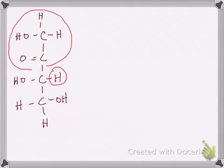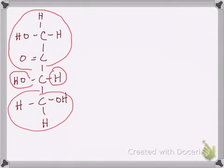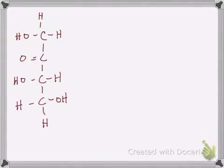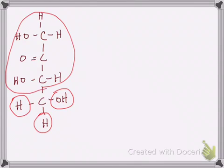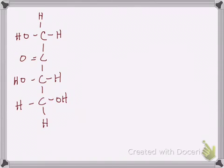For the next carbon, let's look at the four groups: we have a hydrogen, this big group up here, a hydroxyl group, and this group. None of those are the same — those are four different groups — so the third carbon is chiral. That's our first chiral carbon. The last carbon has a hydroxyl group, a hydrogen, another hydrogen, and this big group up here. It's bound to two hydrogens, so that one is achiral. The only chiral carbon in this first structure is the number three carbon.